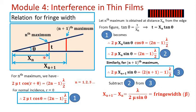We have the nth maximum obtained at distance xn from the edges in contact. From this figure we can write tan theta equal to t upon xn, and therefore the thickness t of the film at this point can be written as xn times tan theta. Substituting t equal to xn tan theta into the condition, the condition for the nth maximum becomes: 2 mu xn tan theta cos theta equal to (2n minus 1) lambda by 2. Since tan theta times cos theta equals sin theta, the condition for the nth maximum becomes 2 mu xn sin theta equal to (2n minus 1) lambda by 2.